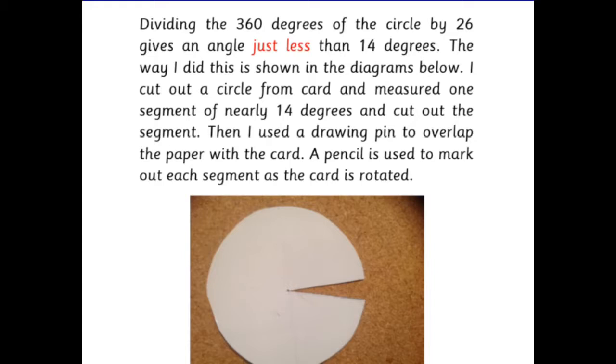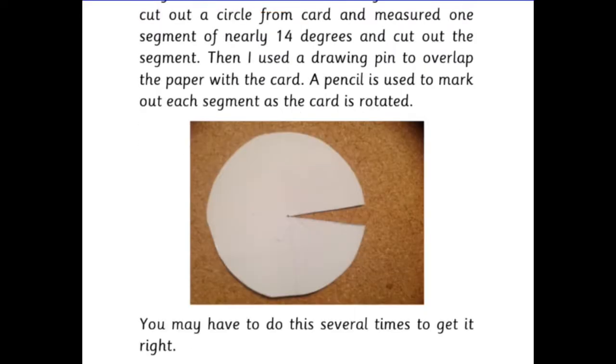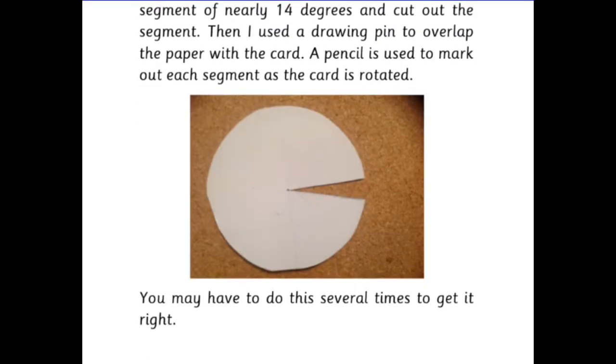The way I did this is shown in the diagrams below. I cut out a circle from card and measured one segment of nearly 14 degrees and cut out the segment. Then I used a drawing pin to overlap the paper with the card. I used a pencil to mark out each segment as the card was rotated. You may have to do this several times to get it right.